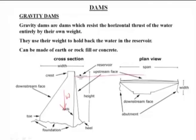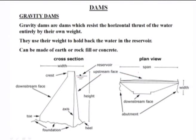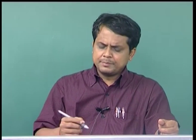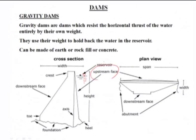Gravity dams use their complete weight to hold back the water in the reservoir. They can be made of earth or rock fill. In the cross-sectional view, the side facing the stored water is called the upstream face; the storage area is the reservoir. The bottom part on the reservoir side is called the heel, and the opposite side is called the toe — because of water pressure thrust, the dam may rotate about this point.